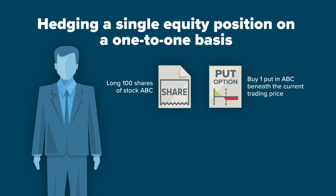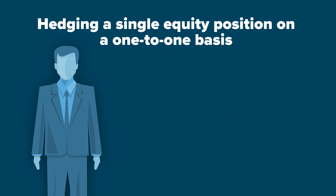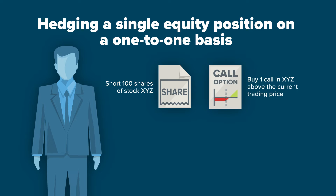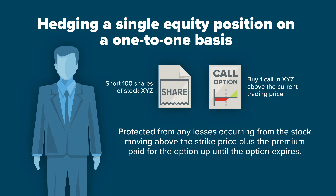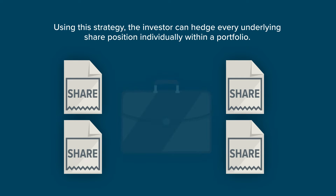Hedging a single equity position on a one-to-one basis is defined when the investor who is long 100 shares of stock ABC would buy one put in ABC beneath the current trading price, and be protected from any moves occurring in the stock from the stock moving below the strike price minus the premium paid for the option until the option expires. The investor who is short 100 shares of stock XYZ would buy one call in XYZ above the current trading price and be protected from any losses occurring from the stock moving above the strike price plus the premium paid for the option up until the option expires. Using this strategy, the investor can hedge every underlying share position individually within a portfolio.